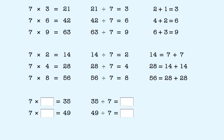Now the last two. First, the 5 in 35 tells us that the missing factor is 5. That means 35 divided by 7 is 5.